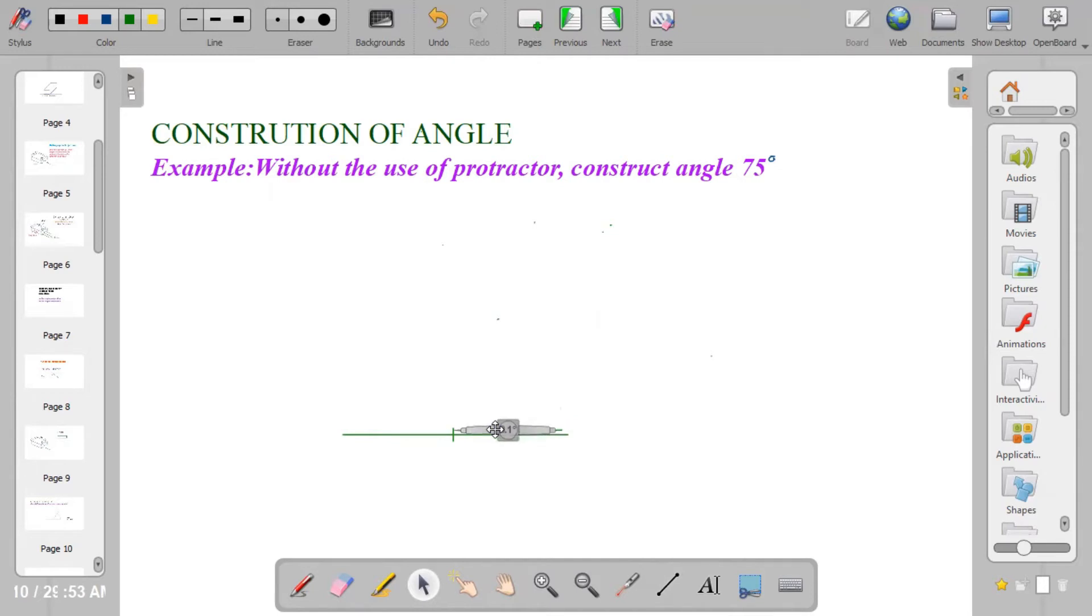Center at your starting point, draw a semicircle and name it point P and Q.